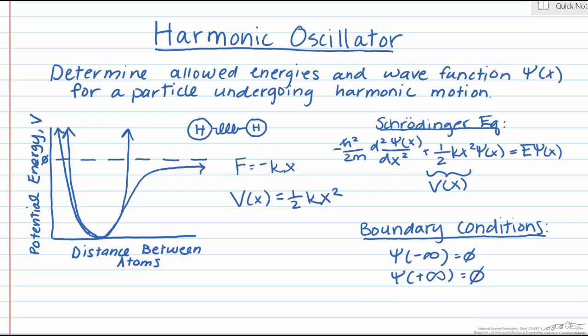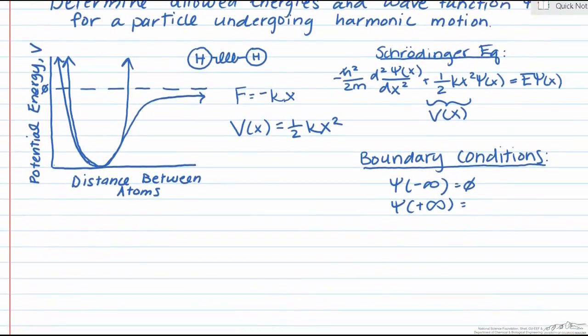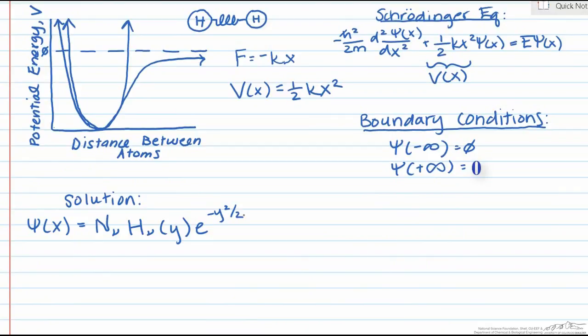The solution shows that the wave function for a harmonic oscillator has the form ψ(x) equals N times some polynomial in x times a Gaussian function. Here N is a normalization constant and the specific polynomials are called Hermite polynomials, where y is equal to x divided by the constant alpha.